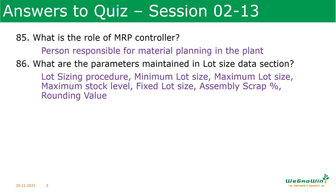What are the parameters maintained in the lot sizing data section? There are many parameters defined there, and understanding each one is very important. How the system proposes purchase quantities, how the system gives that understanding of quantity and frequency — these things are very, very important, because many companies face conflicts between planning and purchasing because of this. Parameters include: lot sizing procedure, minimum lot size, maximum lot size, maximum stock level, fixed lot size, assembly scrap percentage, and rounding value.